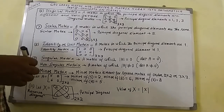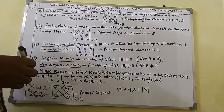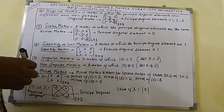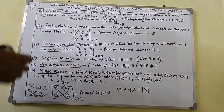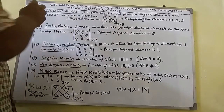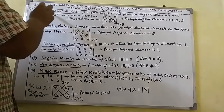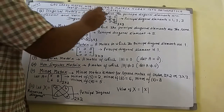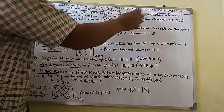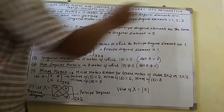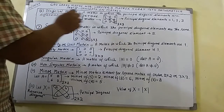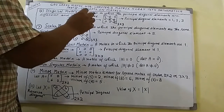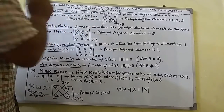I am going to discuss concepts on matrix covered in part 2. Point number 6: a diagonal matrix is a matrix in which the principal diagonal elements are different and non-zero, and it is called a diagonal matrix.